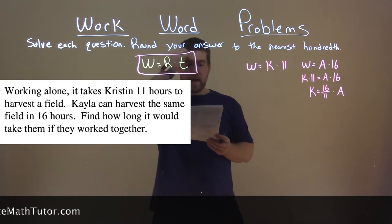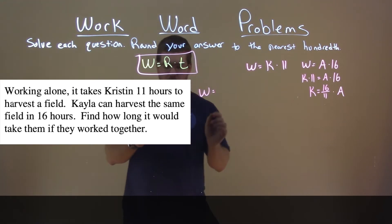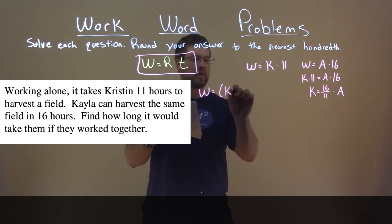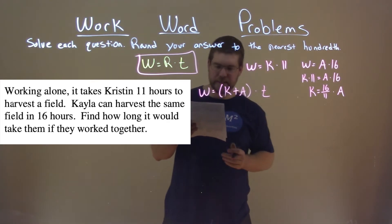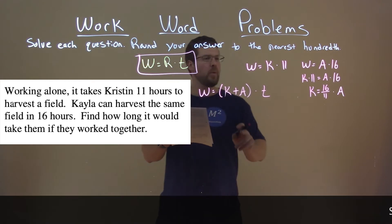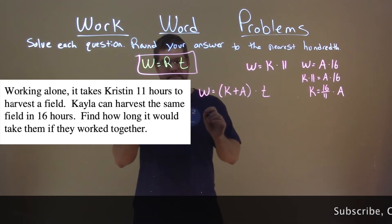They ask us here how long it would take them if they worked together. So that same work together, we add their work rates, K plus A times T here. Well, we know that work is equal to A times 16.